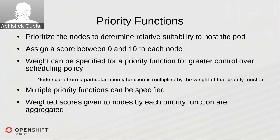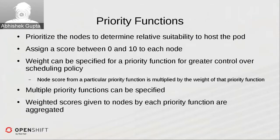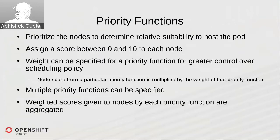Coming to the priority functions — these come into play in the second phase of the scheduler. They determine the relative suitability of a given node to host the pod. Each priority function can assign a score of 0 to 10 to each node. You can further refine your policy by specifying a weight to a particular priority function to give greater importance to one algorithm while deprioritizing another without removing it completely.